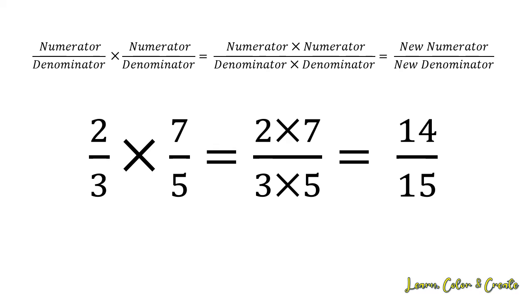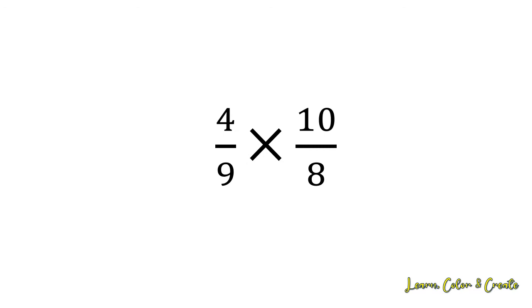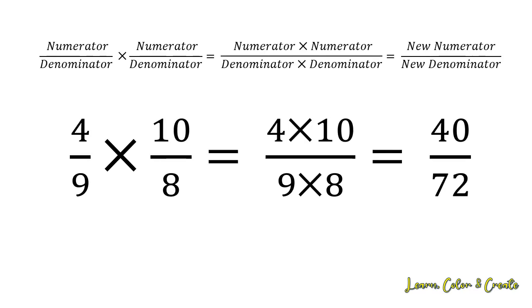Let's look at the next example. If I have 4 ninths multiplied by 10 eighths, I'm going to multiply the numerators 4 times 10 to give a new numerator of 40, multiply the denominators of 9 times 8 to get a new denominator of 72, and that will give me a final answer of 40 over 72.